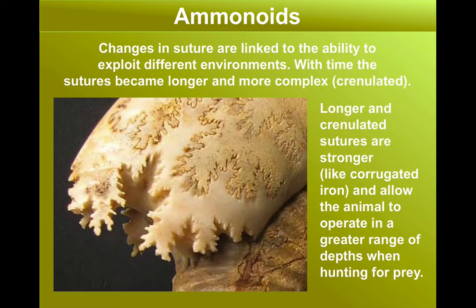Over time, the suture line became more and more complex, getting a more wrinkled, crinkly structure that you can see in this image. You can see the marks left on the inside of the shell. In this particular specimen, you can see where the end of one of these chambers is and just how complex a structure it is. The greater complexity gives the ammonite shell more strength — a bit like the way corrugated iron works.